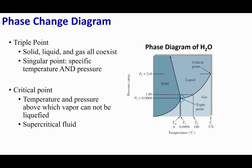Let's talk about some other interesting points on the phase diagram. The intersection of all the line segments is called the triple point. At the triple point, solid, liquid, and gas are all in equilibrium and all exist simultaneously. This is a specific temperature and pressure unique to each chemical compound.